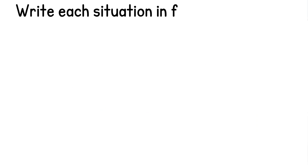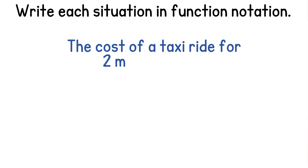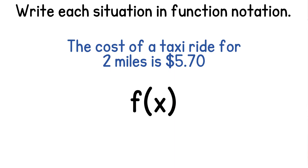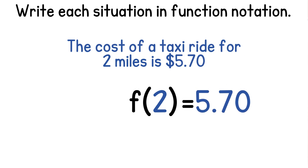Let's practice by writing situations in function notation. We'll start with the cost of a taxi ride for two miles as five dollars and seventy cents. We'll take our function f of x and we know that the input was two miles, so we'll replace x with two. The output, which is the total cost, is five dollars and seventy cents. So we can say that f of two equals five dollars and seventy cents.